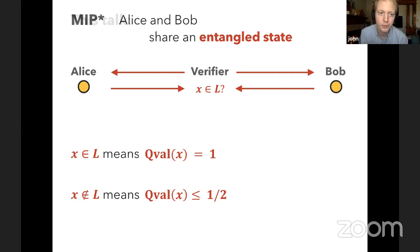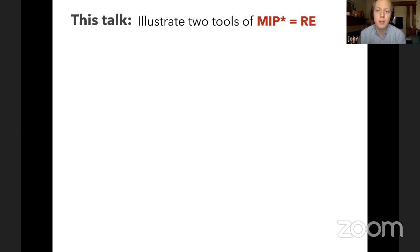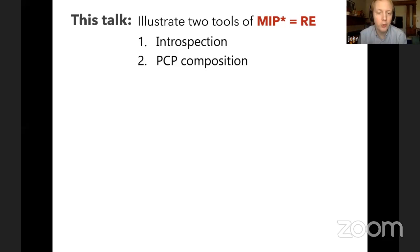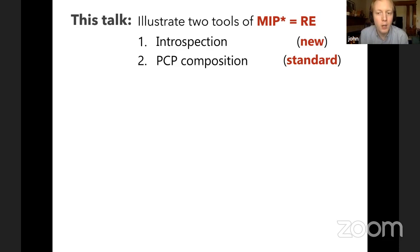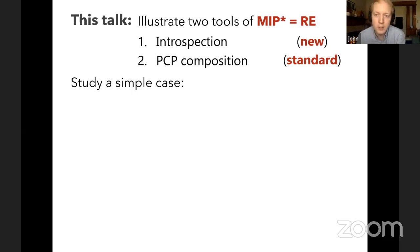This talk will illustrate two tools of the MIP* equals RE result. We already saw one tool in Anand's talk — the quantum low degree test, used to self-test quantum states. Now I'll show two more: introspection and PCP composition. I'll focus on introspection because it's the newer tool. PCP composition is standard, having been in theoretical computer science for about 30 years.